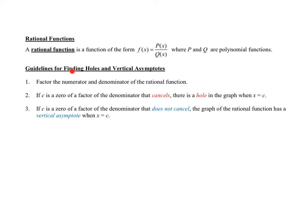In this video, we want to find holes and vertical asymptotes for a group of functions called rational functions. A rational function has this format: it is a polynomial divided by another polynomial.